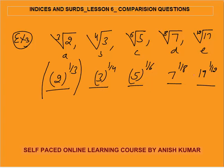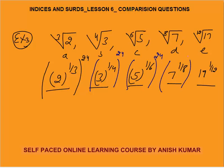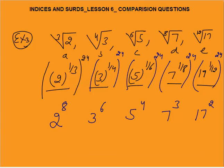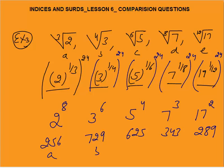The power must be divisible by 3, 4, 6, 8, and 12 — that is 24, the LCM. Raising everything to power 24: 2^(1/3) becomes 2^8 = 256, 3^(1/4) becomes 3^6 = 729, 5^(1/6) becomes 5^4 = 625, 7^(1/8) becomes 7^3 = 343, and 17^(1/12) becomes 17^2 = 289.